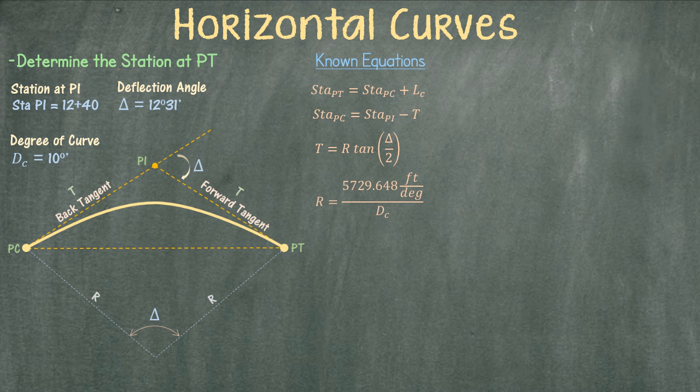We know that the equation for the radius is 5729.648 feet over the degree of the curve, which is a given. Up to here we have all the equations required to determine the station at PC. We are still missing the equation to determine the length of the curve.